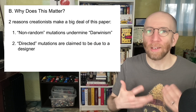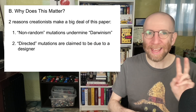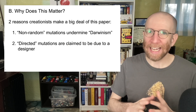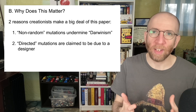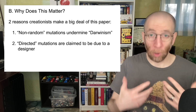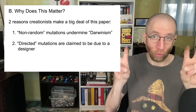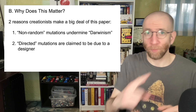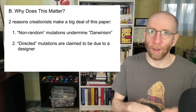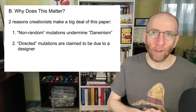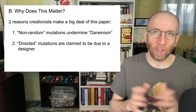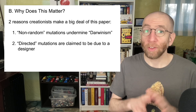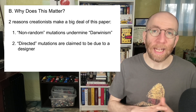Why does this paper matter so much for creationists? I think there are two big reasons. First, anything non-random, anything directed, anything that looks purposeful can be used to undermine Darwinism — and it's always framed as Darwinism, sometimes neo-Darwinism like in the Casey Luskin piece, but a lot of times just Darwinism, as was the case in my conversation with Carissa and Sal.